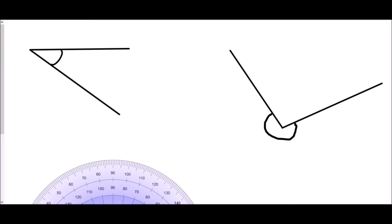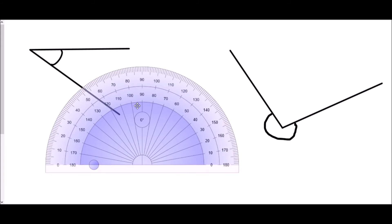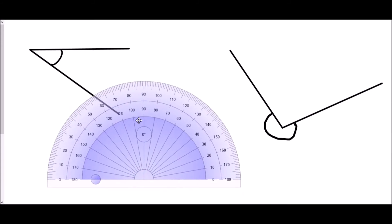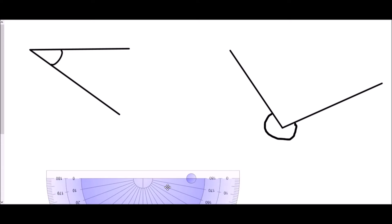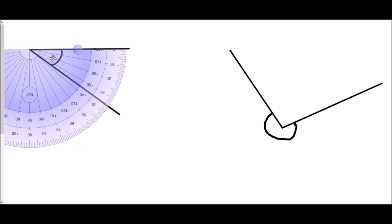Sometimes the angle may be set up in a way that makes it quite difficult to measure. If you're doing this on paper you could turn your piece of paper around, or we can just turn the protractor upside down — the numbers can still be read and we can still measure the angle exactly as before. This is once again an acute angle, much less than 90 degrees. The zero is on the outside, so I use the outside numbers. I've reached 30, and I'm on the exact midway point between 30 and 40, so I have 35 degrees.